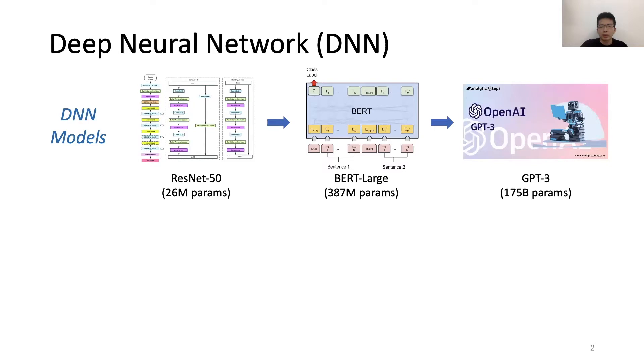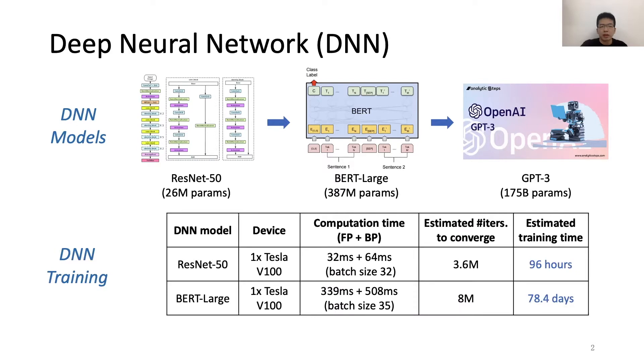Deep neural networks have evolved rapidly in recent years. We have seen numerous emerging DNN models such as ResNet, BERT, and GPT-3, and they have brought fundamental improvements for applications such as computer vision and natural language processing. On the other hand, training these DNN models is time-consuming since they have a large number of parameters that need to be trained.